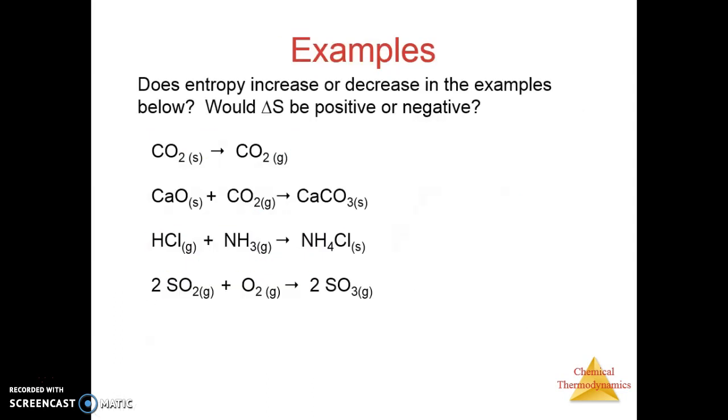Here's some examples. Solid carbon going to gaseous carbon, sublimation, delta S is positive, you've got an increase in entropy. Going from a solid and a gas just to a solid, that's a decrease in entropy, fewer moles plus all I have left is a solid. HCl gas and ammonia gas to make ammonium chloride solid, I'm decreasing my number of moles, delta S is decreasing, less entropy. Finally, going from three moles all gases to two moles all gases, that will be an increase in entropy. That should be a positive, typo on my part, sorry about that.